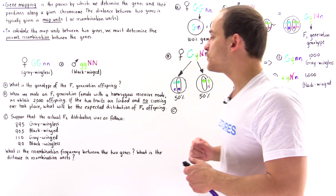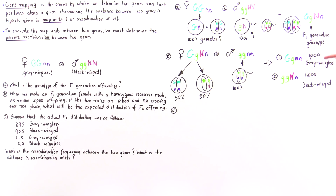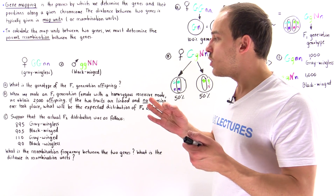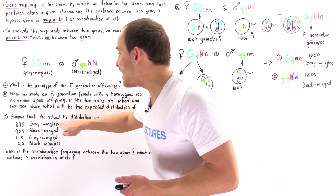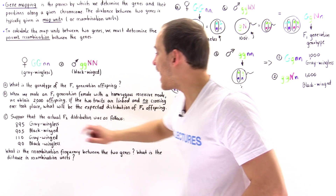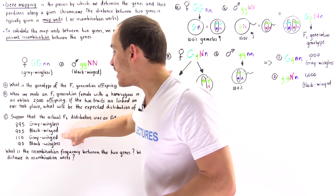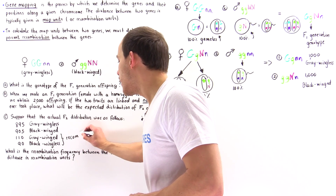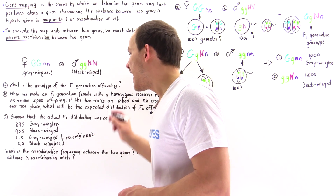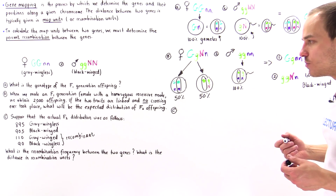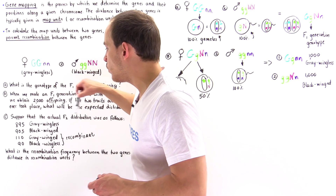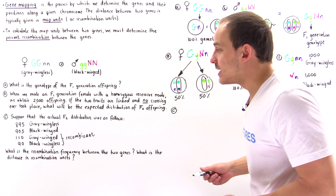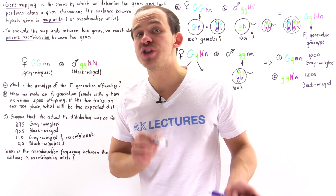Suppose the actual F2 distribution was different. Because crossing over does take place, we see not only gray wingless and black winged offspring, but also gray winged and black wingless offspring. These last two are the recombinant offspring, produced as a result of crossing over and the production of recombinant chromosomes. We are given: 895 gray wingless, 905 black winged, 110 gray winged, and 90 black wingless, totaling 2,000 offspring.